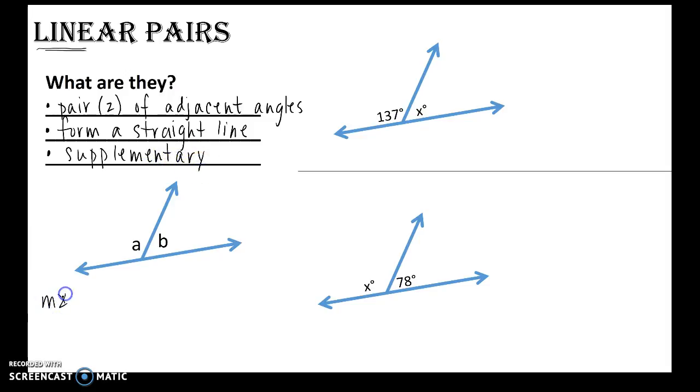So what do I know? I know the measure of angle a plus the measure of angle b will always equal 180 degrees. Okay, so adjacent, we know that they have to share that common side, and then this will always be a straight angle.